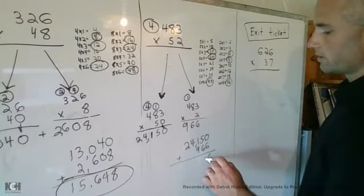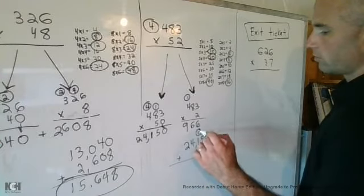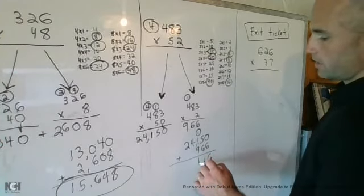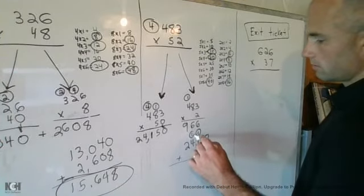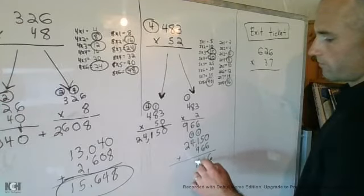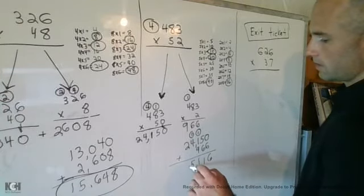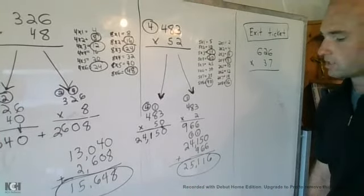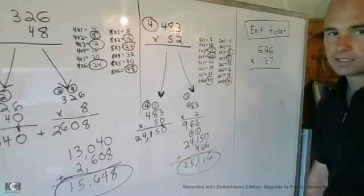6 in the ones place. 11, so you have to carry the 1 for the tens place. 11 again, so carry the 1. 5 in the thousands and 2 in the 10,000s place, which gives you an answer of 25,116.